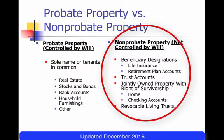We looked at these different types of assets. The assets on the right-hand side are the non-probate property, and if you look down at the bottom of that list, you'll see revocable living trusts.